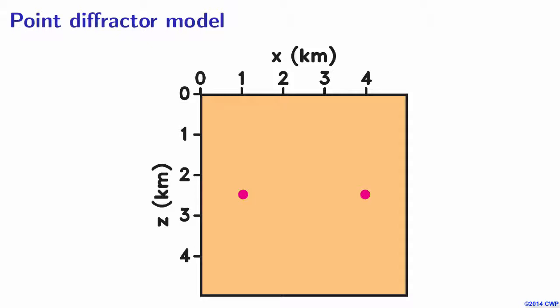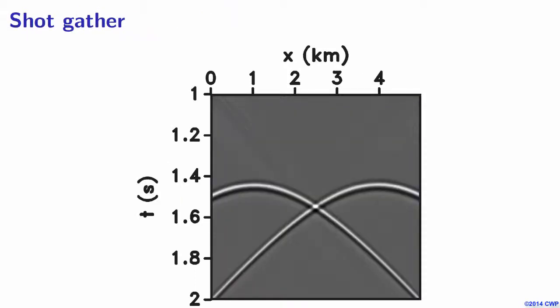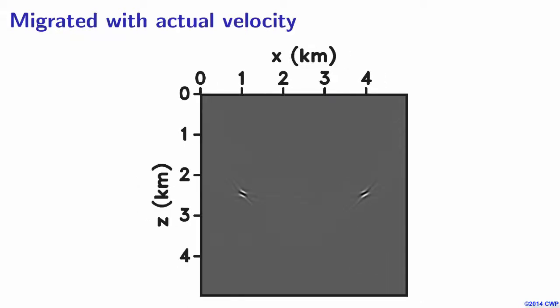Considering this point diffractor model with isotropic background, I did the reverse time migration. This is one of the shot gathers from that model. I did the reverse time migration using the correct velocity model, and I get the correctly focused points. But if I don't have a correct velocity model, then I should get something like smiles and frowns on the final image, which is obvious.